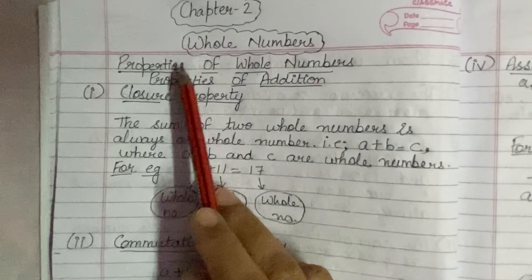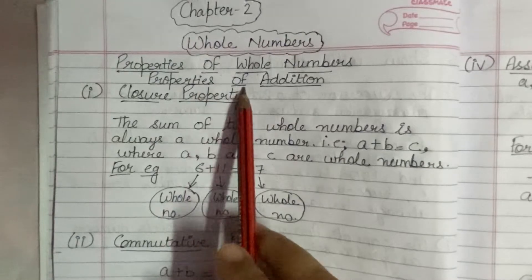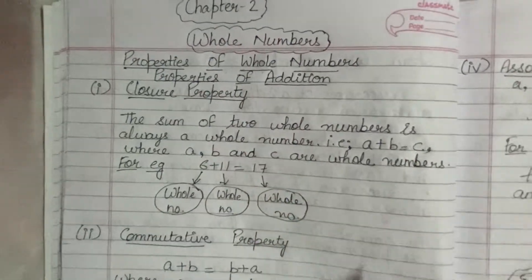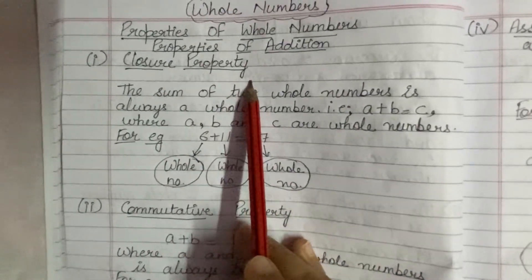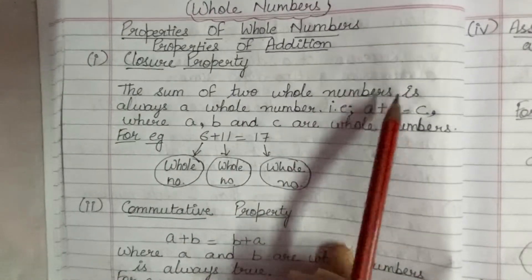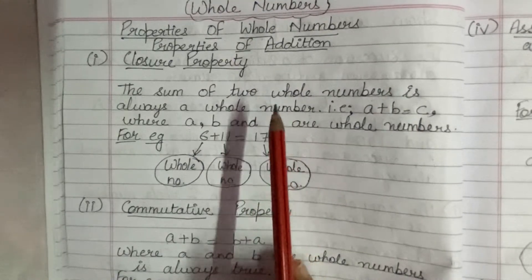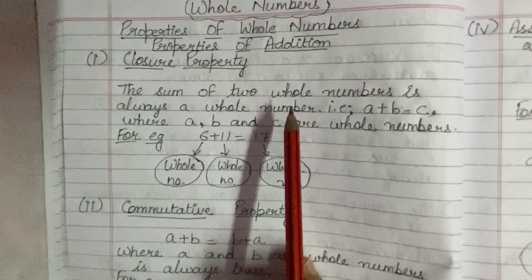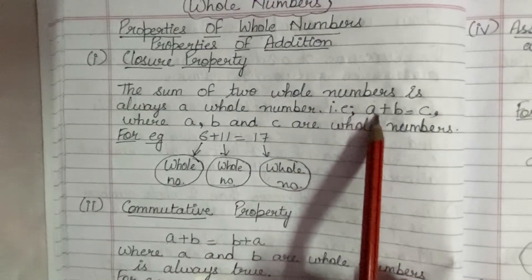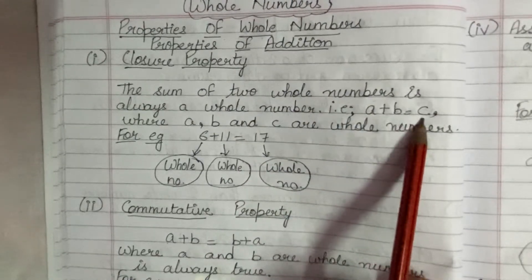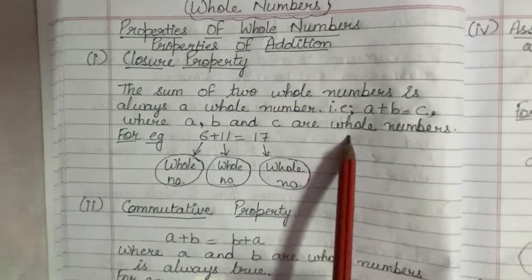In properties of whole numbers, first of all we will study about the properties of addition. In properties of addition, the first property is closure property. Closure property says that the sum of two whole numbers is always a whole number. That means, if you will take two whole numbers and add them, then your answer will also be a whole number. So, that is A plus B is equal to C, where A, B and C are whole numbers.